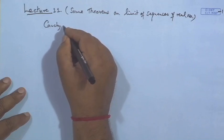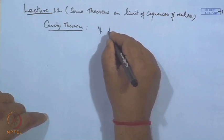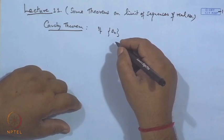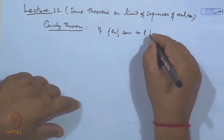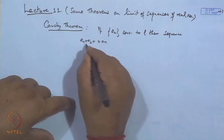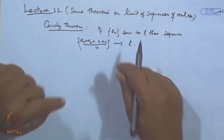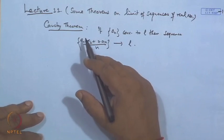In the last lecture, we discussed a few theorems: Cauchy's theorem of the first kind and Cauchy's theorem of the second kind, where we developed some results which will help in getting the limit of the sequence a_n. Cauchy's theorem states that if the sequence a_n of real numbers converges to L, then the sequence of arithmetic means (a_1 + a_2 + ... + a_n)/n will also converge to the same limit L.